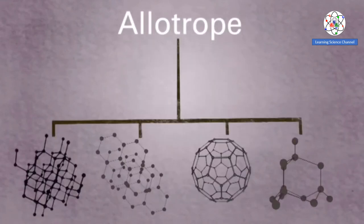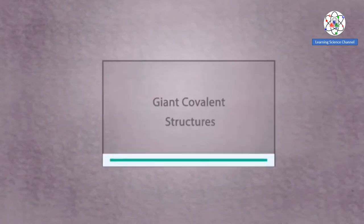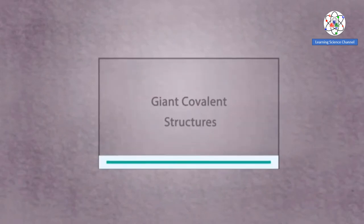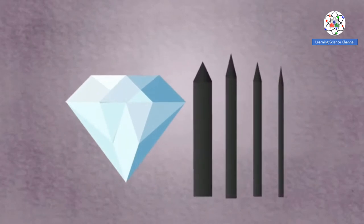The term allotrope refers to different forms of the same element. In our giant covalent structures lesson, you may have learned about the structure of diamond and graphite.